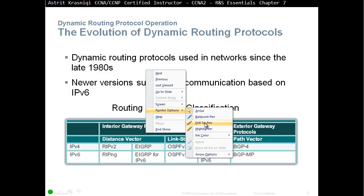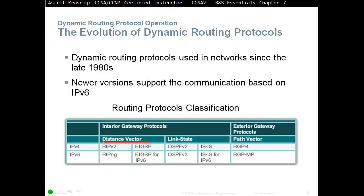Within interior gateway protocols, we have two choices: distance vector and link state protocols. Interior gateway protocols are within our company. If we would like to talk to another company, we use exterior gateway protocols. Distance vector protocols and link state protocols, we are going to talk more in depth later on.